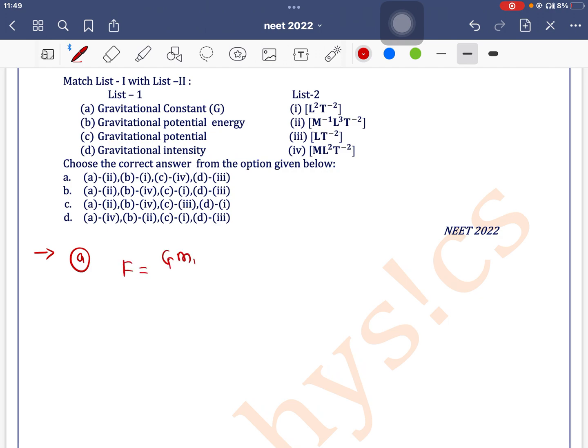G m1 m2 divided by r square. So I can write G is equal to F r square divided by m1 into m2. So dimension of force is M^1 L^1 T^-2, dimension of